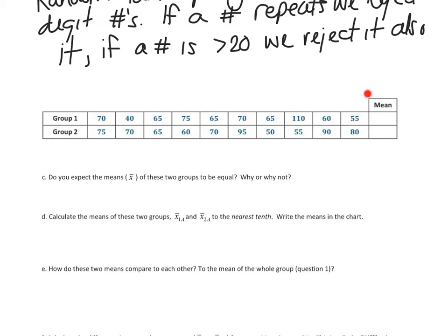So question C, before we actually find the mean, here's the question of the day. Do you expect the means of these two groups to be equal? Why or why not? Well, what are your thoughts? We know the mean of all the numbers, but if I just randomly put them in two groups, does that necessarily mean that they're equal? Well, I'm going to say probably not. My gut says this mean might be close to this mean, but I don't think they have to be the exact same. Now, could they? Of course they could. But do they have to be? I don't think so.